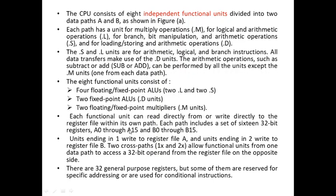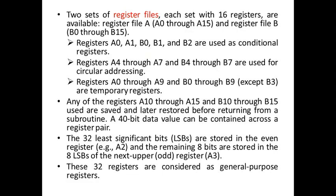Each functional unit has a set of 16 32-bit registers. Data path A has registers A0 to A15 and data path B has registers B0 through B15. Units ending in 1 — L1, S1, M1 — write to register file A, and units ending in 2 write to register file B. There are 32 general purpose registers, but some are reserved for specific addressing or conditional instructions. The two sets of register files A0 to A15 and B0 to B15 are used for certain specific functionalities.